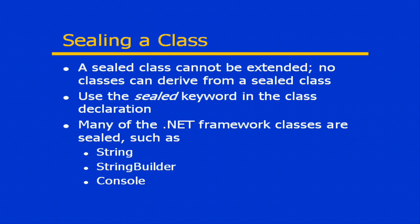We use the sealed keyword in the class declaration to identify the fact that this is a sealed class. Now technically, many of the already existing classes in the .NET framework are sealed. Classes such as the string class, the StringBuilder class, and the console class are three examples of classes that we've already used that represent sealed classes. You cannot create your own classes that extend from those.